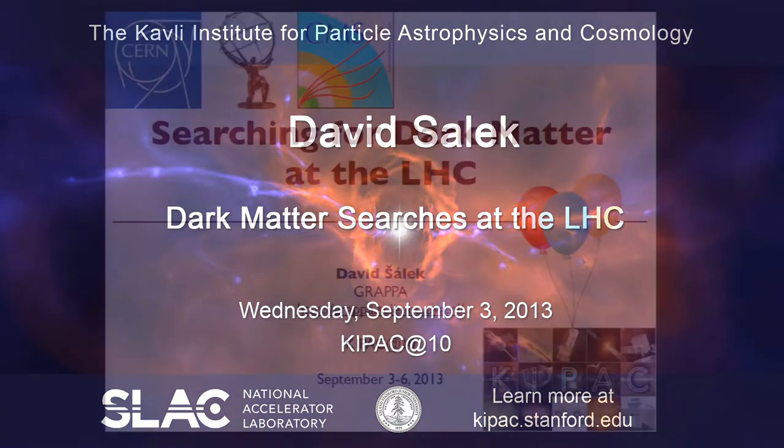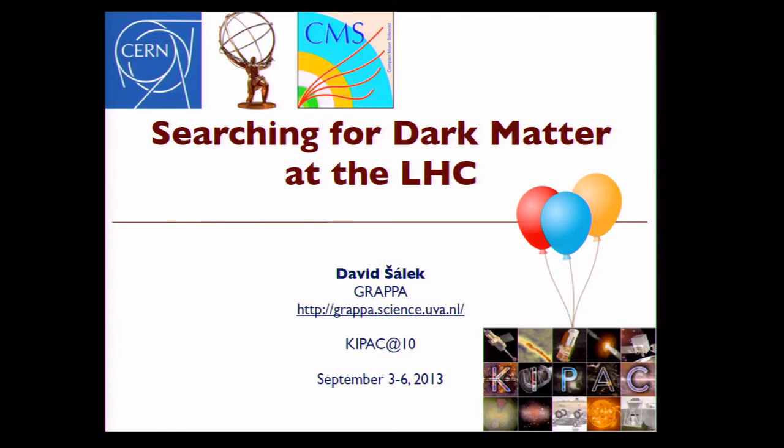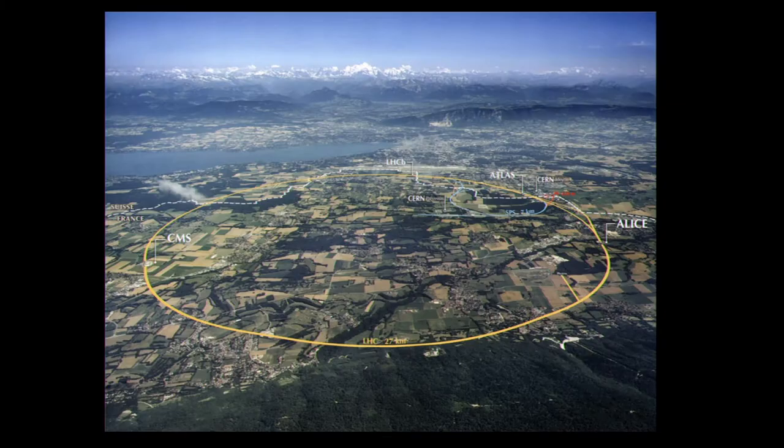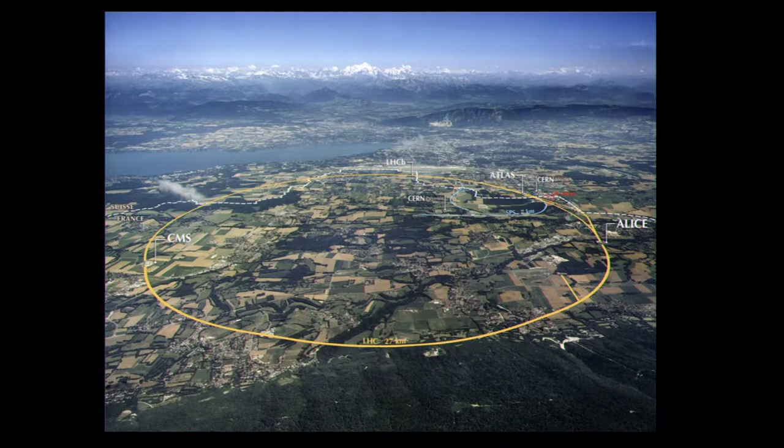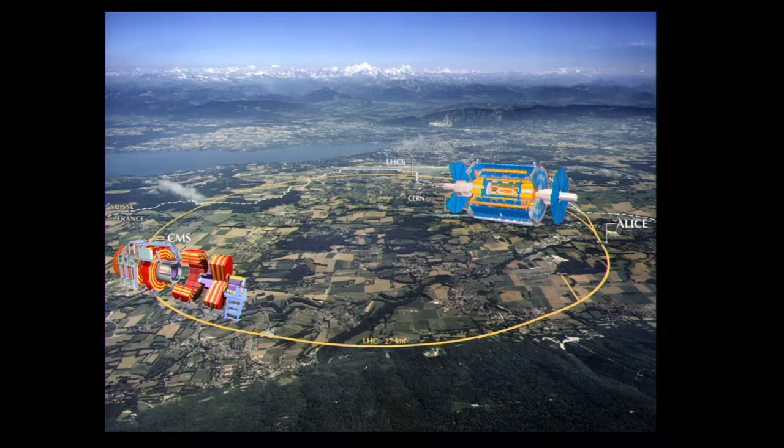What I will do here is actually summarize all the dark matter related results that we have at the LHC for you. Just as an introduction, what you can see here is actually Geneva and Mont Blanc here. Also you can see the LHC 27 kilometer ring and here we have two general purpose detectors, ATLAS and CMS.